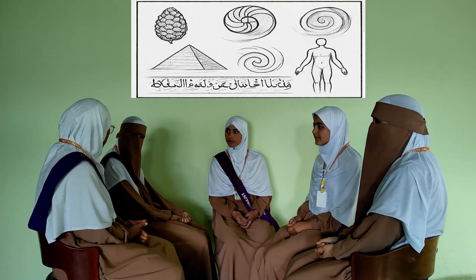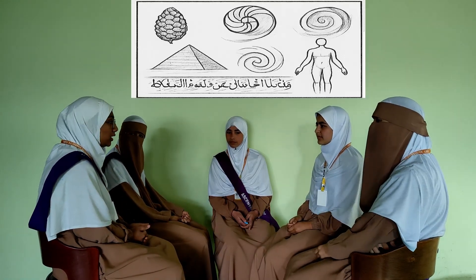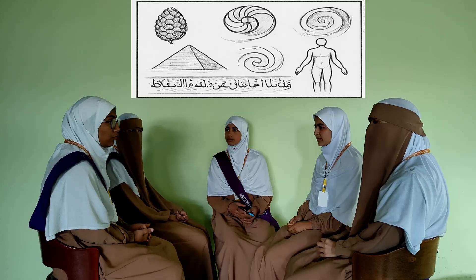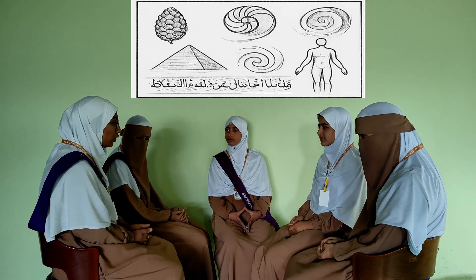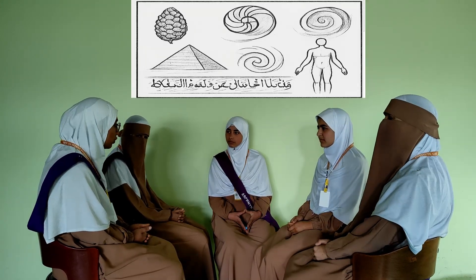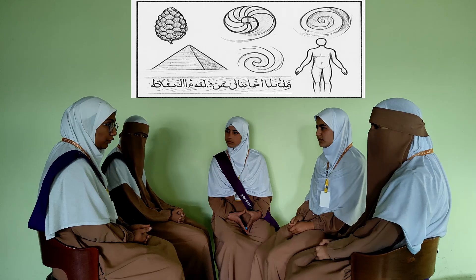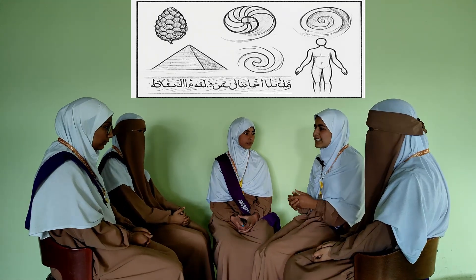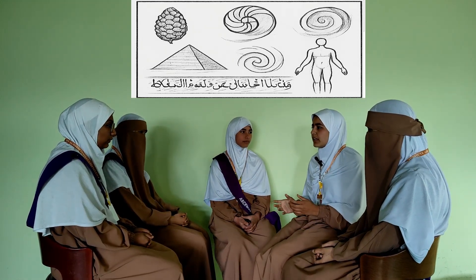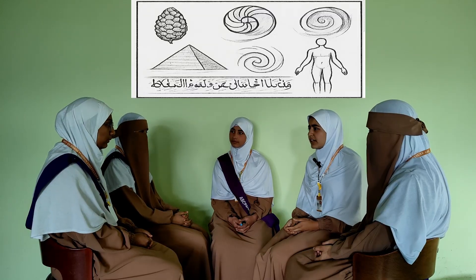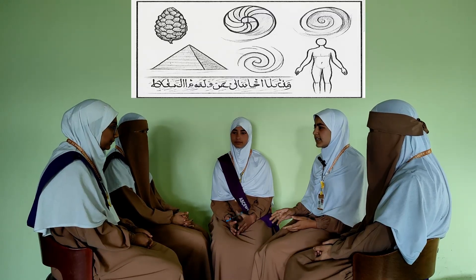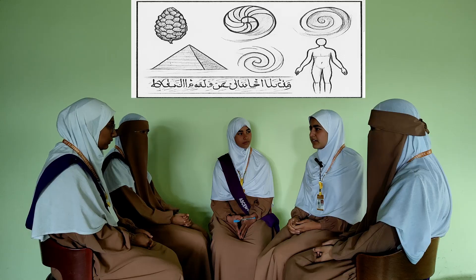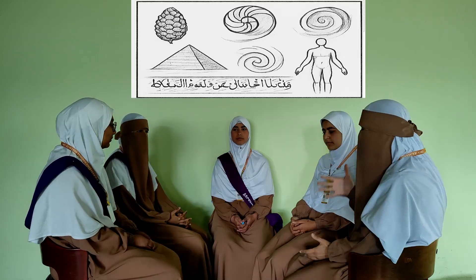Sister Nalza, did you know our own bodies are built on these proportions? Our fingers, the ratio of our forearm to our hand, even our facial features align with the golden ratio. It's as if the universe follows a blueprint. This reminds me of a beautiful Quranic verse: 'Verily, we have created all things in due measure.' It's incredible how Allah has designed everything with mathematical precision.